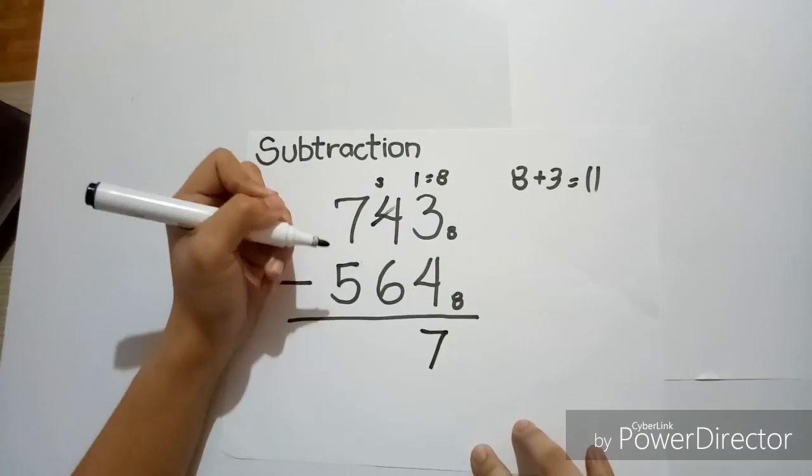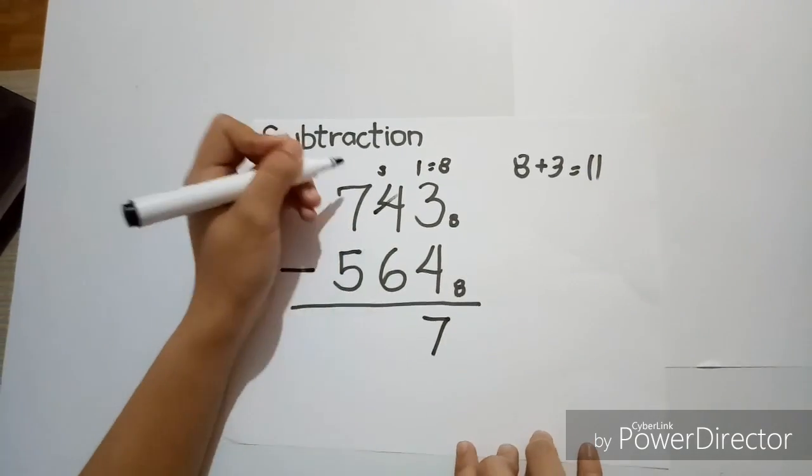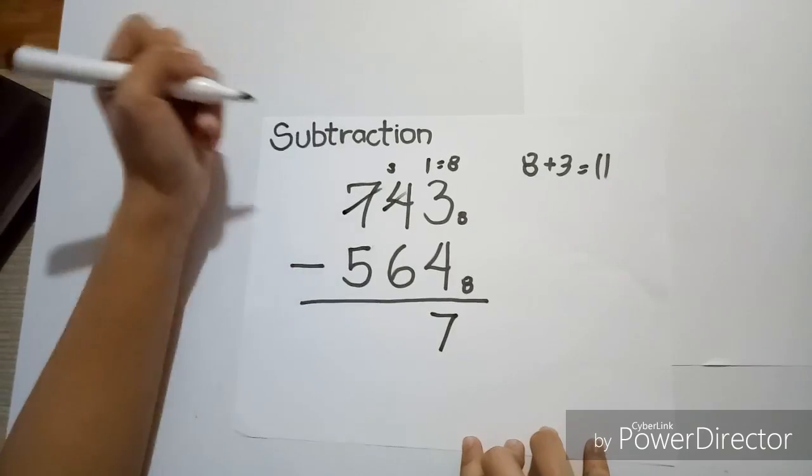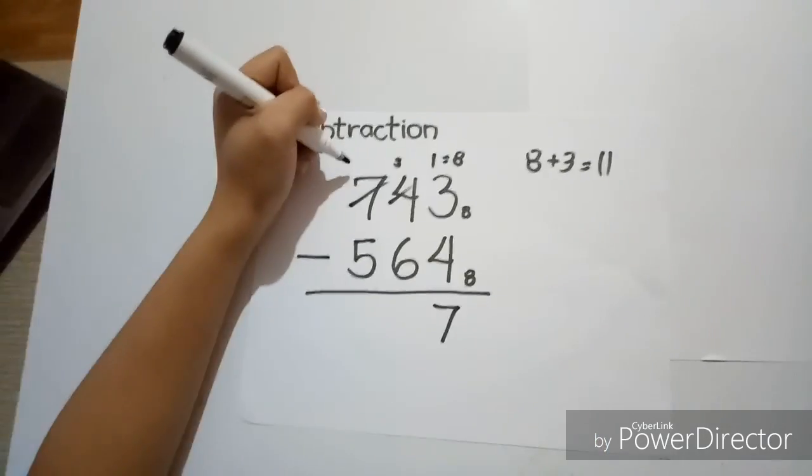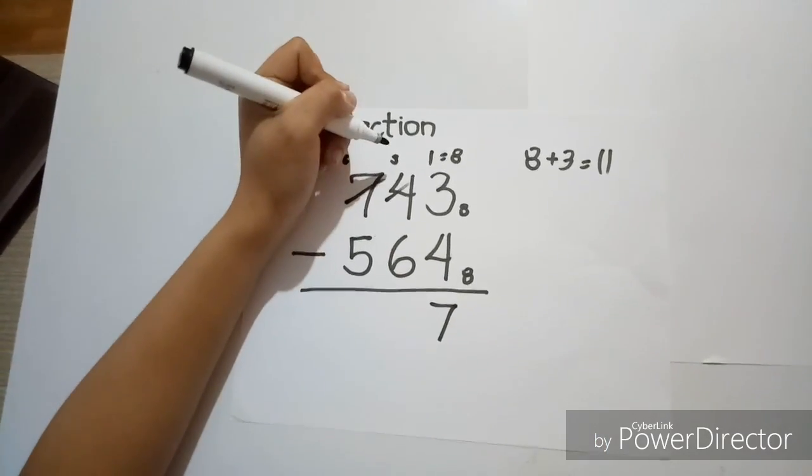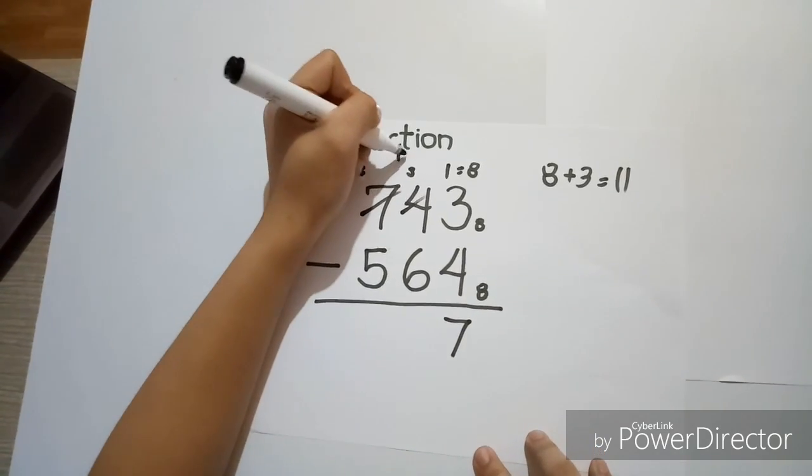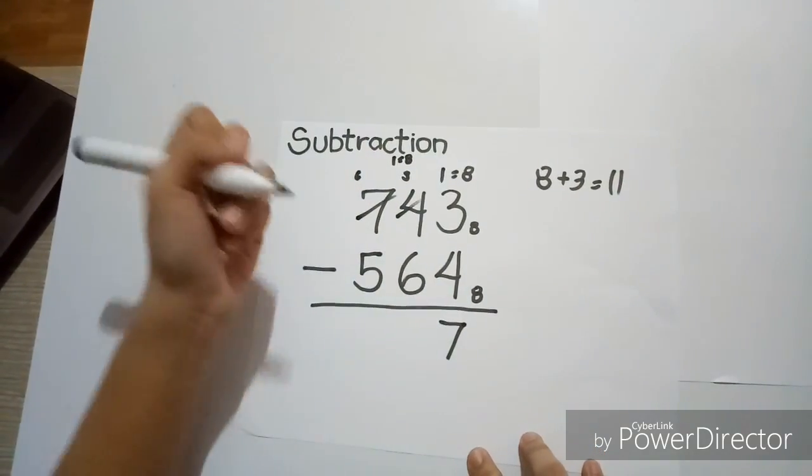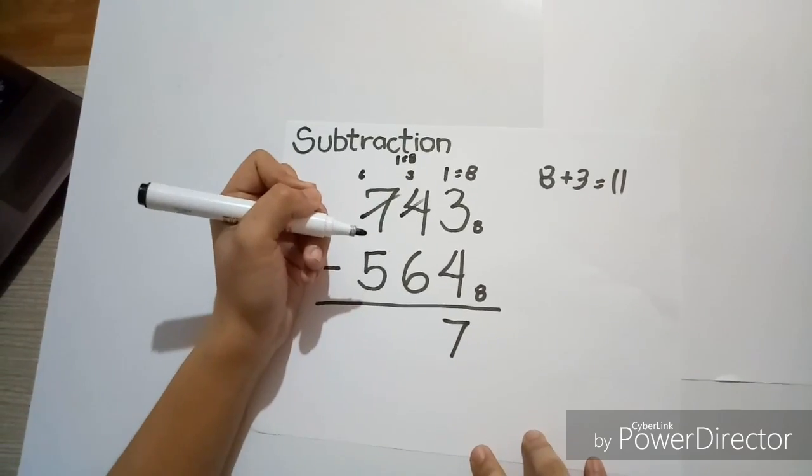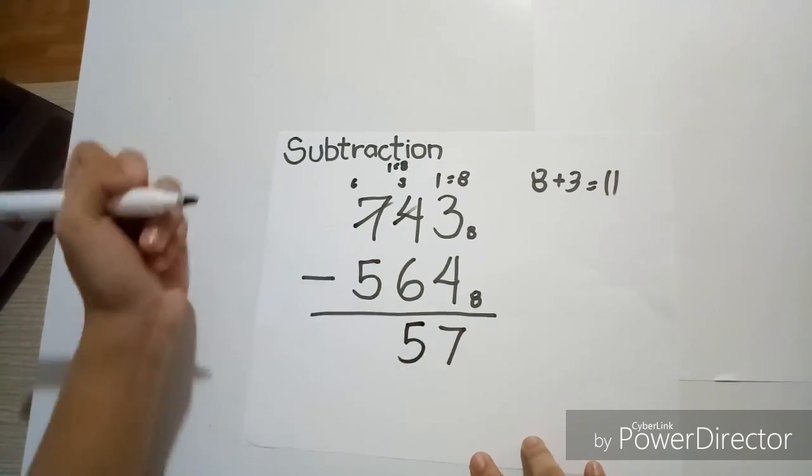Now, we cannot subtract 6 from 3, so we'll also have to borrow. And since 1 is equal to 8, 8 plus 3 is also 11. And 11 minus 6 is equal to 5.